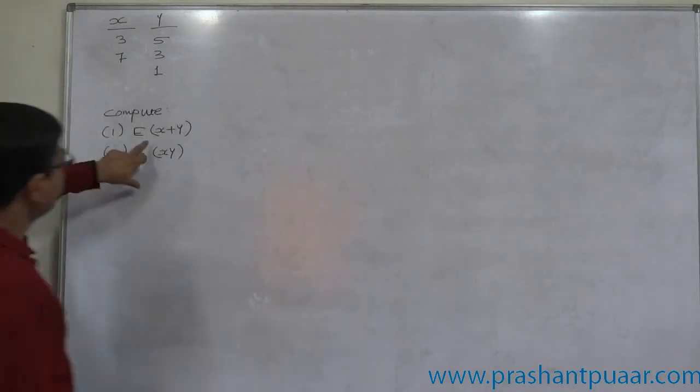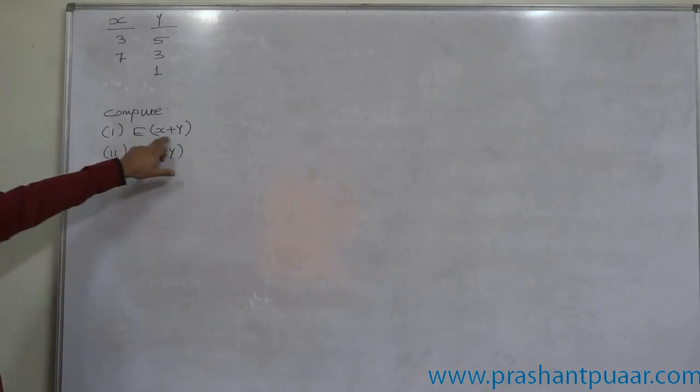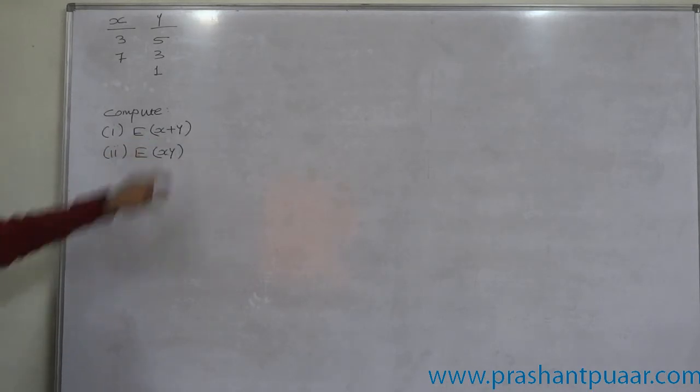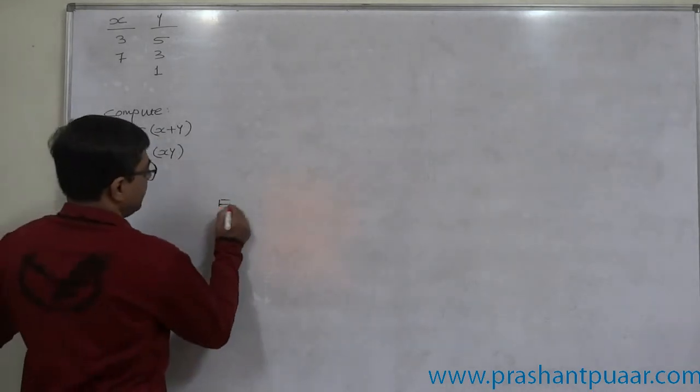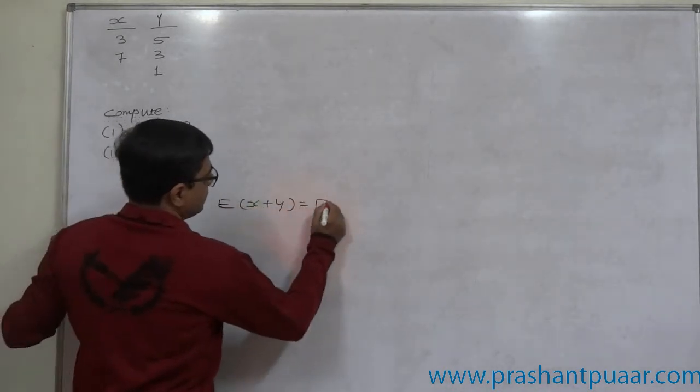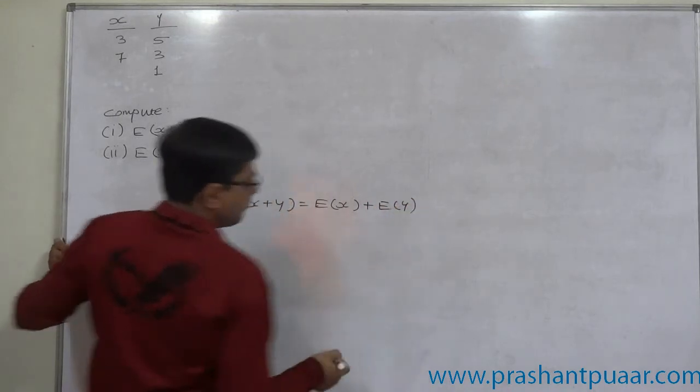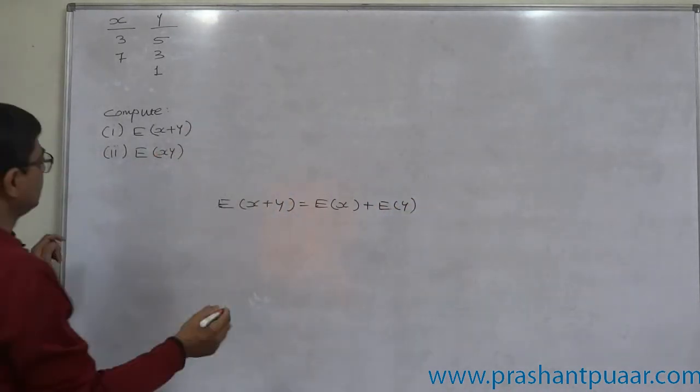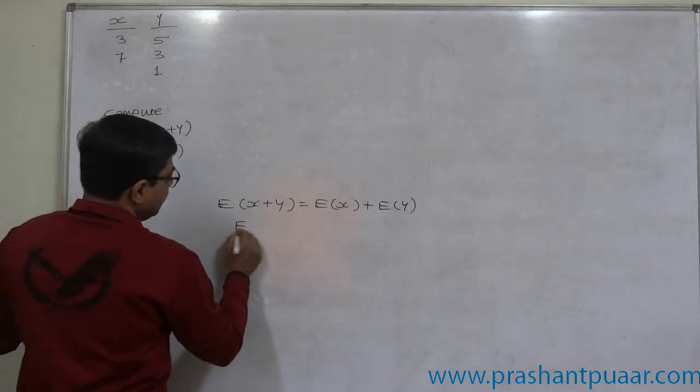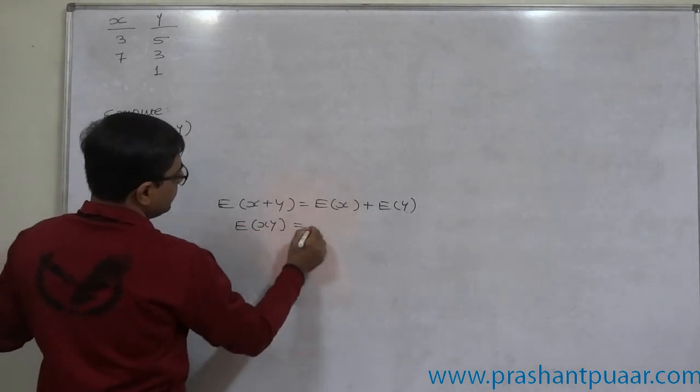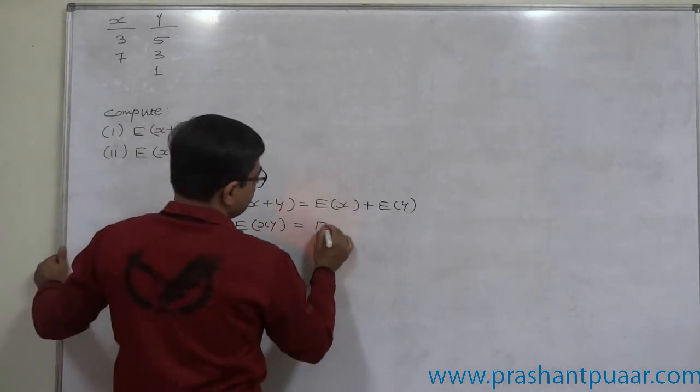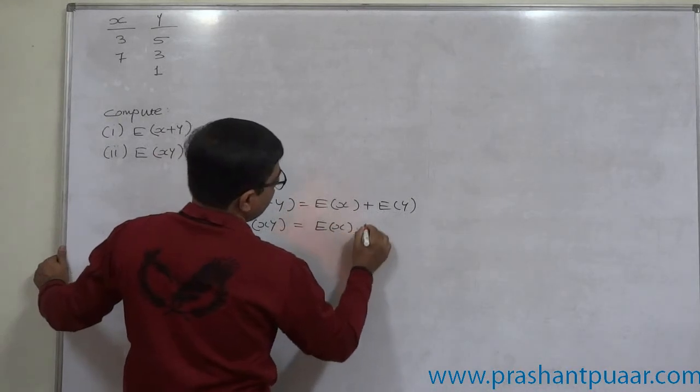Now, in case of two independent variables, E of x plus y is nothing but E of x plus E of y. This is very important property of expected values. And similarly, again in case of two independent variables, E of xy equals to E of x into E of y.